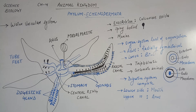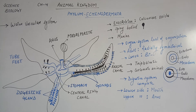Development इनका Indirect होता है, मतलब Zygote से Adult बनने के बीच में एक और Stage आ जाती है जिसको हम Larval Stage बोलते हैं, जहाँ पर इनके Larvae आ जाते हैं. तो इनका Development Indirect हो गया. जो इनके Larvae होते हैं वो Free Swimming होते हैं, क्योंकि Fertilization External था, Water में ही Sperms और Ova Release हुए थे, और वहीं पर Zygote का Formation हुआ था, तो Larvae भी वहीं Form होंगे, इसलिए वो Free Swimming Larvae होते हैं.